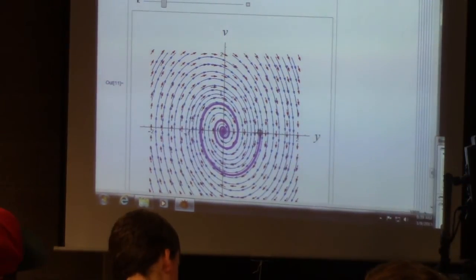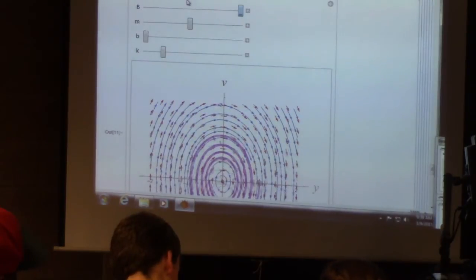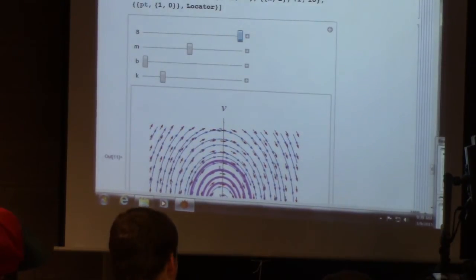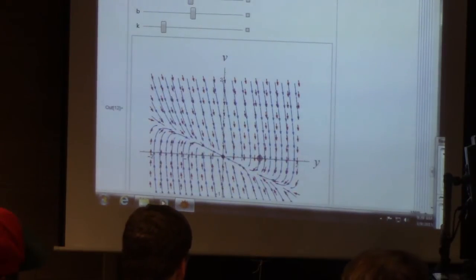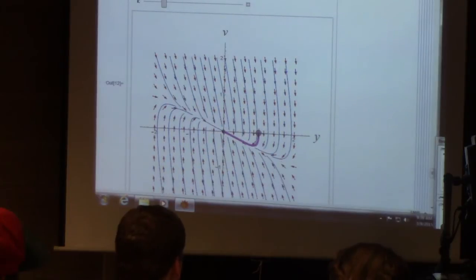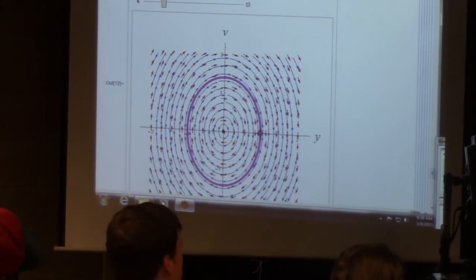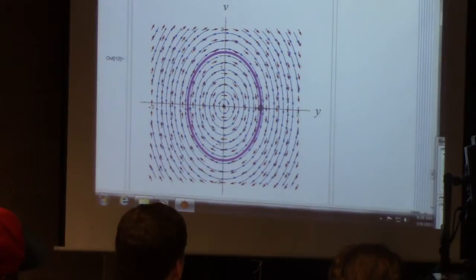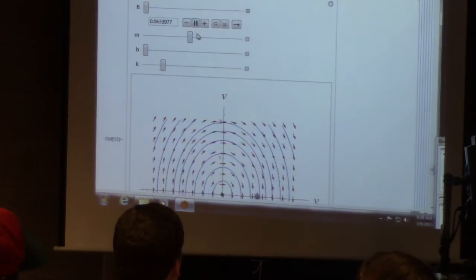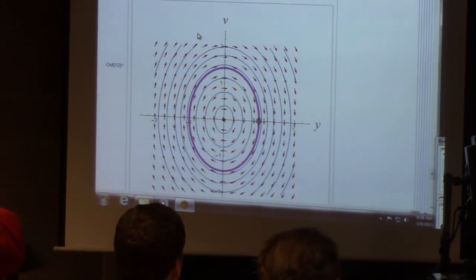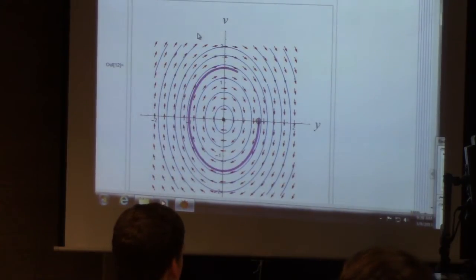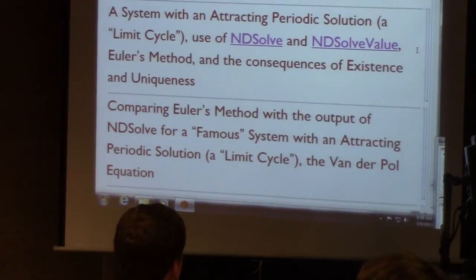When little b is equal to zero — no damping, no loss of mechanical energy — we get periodic solutions. The mass goes back and forth forever. Solutions involve pure cosines and sines with no exponential decay. It's really important that you learn how to think about those pictures and interpret them in terms of the motion of the mass on the spring.